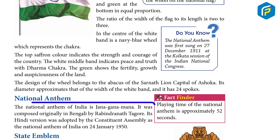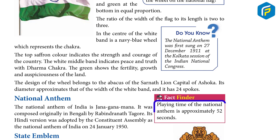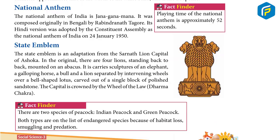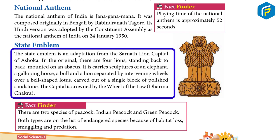National Anthem: The National Anthem of India is Jana Gana Mana. It was composed originally in Bengali by Rabindranath Tagore. Its Hindi version was adopted by the Constituent Assembly as the National Anthem of India on 24 January 1950. Fact: The playing time of the National Anthem is approximately 52 seconds.